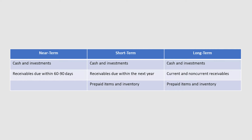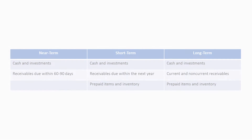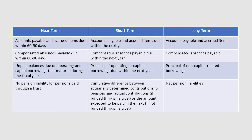Both the short-term and long-term approaches would report prepaid items and inventory, but not the near-term approach, which defines financial resources in a way that excludes items that are not expected to be converted to cash. None of the approaches would report capital assets such as buildings and roads in the governmental funds. All three approaches would report payables, but the near-term approach would be limited to those normally due within 60 to 90 days after fiscal year end, and the short-term approach to those normally due within the next year. The amounts of outstanding bonds and notes and pension liabilities reported under the near- and short-term approaches would be limited. The long-term approach would report all operating liabilities, but not debt that financed the government's capital assets.